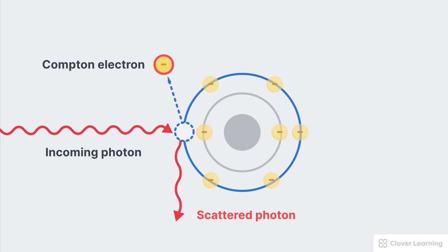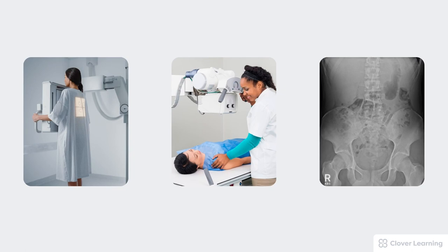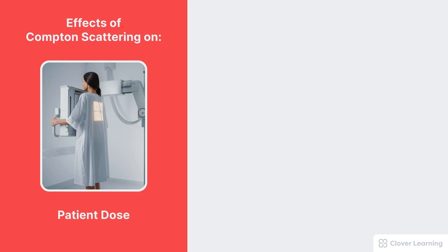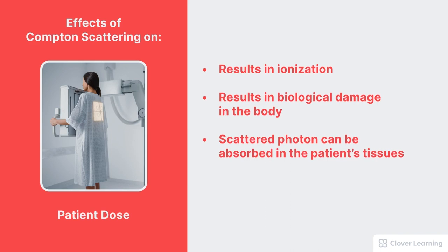So what are the effects of Compton scattering? Remember the three areas of concern: patient dose, occupational dose, and image quality. Compton scattering affects all three areas and none of these effects are good. Starting with patient dose — Compton scattering does result in ionization, so the free electron that gets created crashes through surrounding tissues and cells, resulting in biological damage. The scattered photon can also be absorbed in the patient's tissues, causing even more harm and more dose to the patient. All of this results in an increase in the patient's dose.